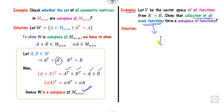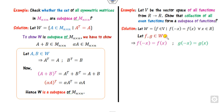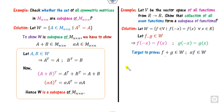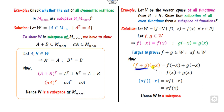Consider W = the collection of all even functions, where f is even means f(-x) = f(x). Take f, g ∈ W. To show f+g ∈ W, we compute (f+g)(-x) = f(-x) + g(-x) = f(x) + g(x) = (f+g)(x). Similarly, (alpha*f)(-x) = alpha*f(-x) = alpha*f(x). Both properties hold — W is a subspace.